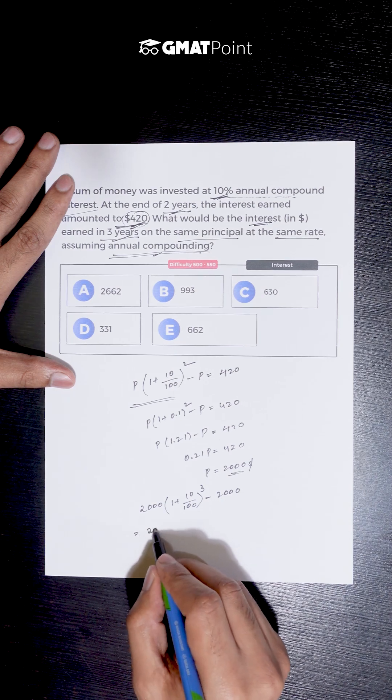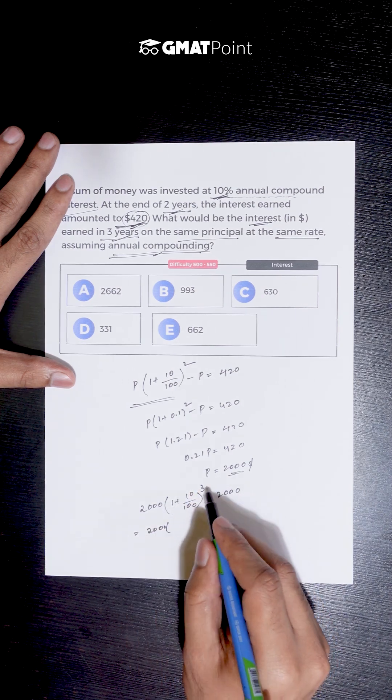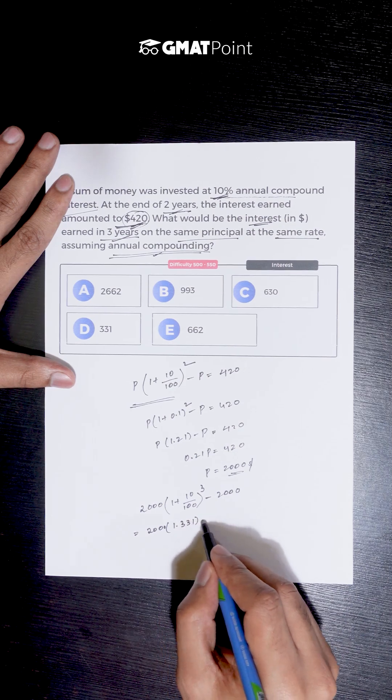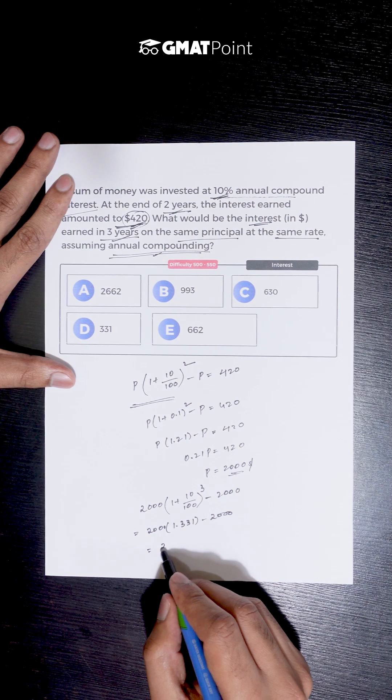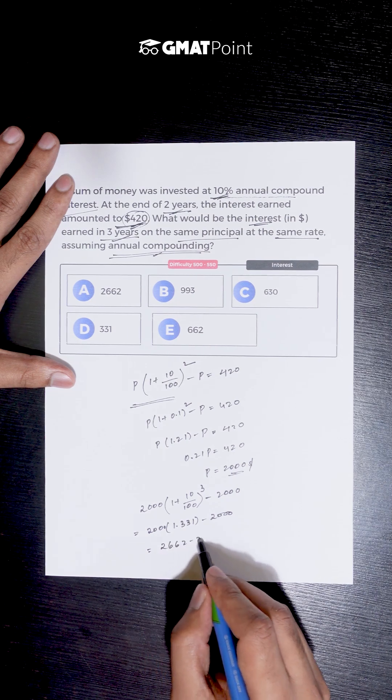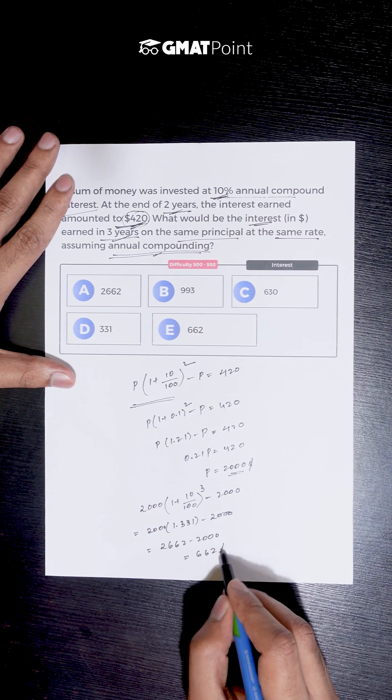So this is 2000 into 1.1 whole cube, which is 1.331 minus 2000. This equals 2662 minus 2000, that is equal to $662.